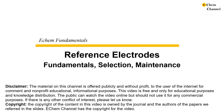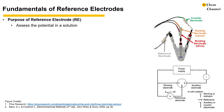Reference electrodes are one of the most important tools for electrochemists, as the knowledge of electrical potential is essential for designing electrochemical devices or performing meaningful measurements. In a three-electrode cell, the working electrode is the electrode of interest, the counter electrode holds the charge flowed from the working electrode, and the reference electrode assesses the potential of the working electrode.